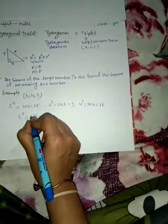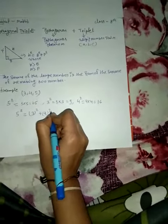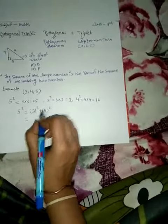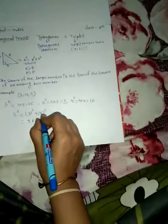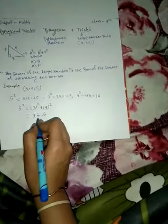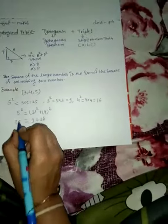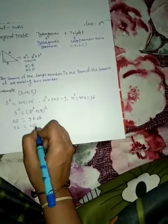So 3 squared, that is 9, plus 4 squared, that is 16. And 5 squared, that means 25. When we add this side, that is also 25.